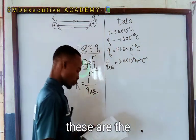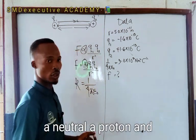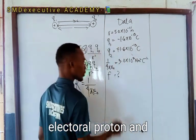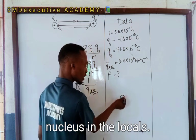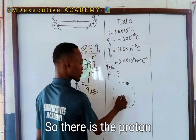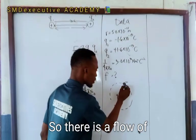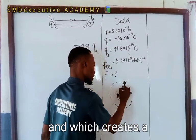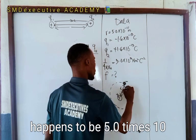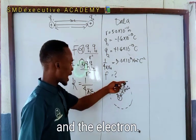For the force of attraction between a proton and an electron: in chemistry we know an atom is made up of electrons, protons, and neutrons. In the nucleus we have the proton, and the electron revolves around the nucleus. The proton carries a positive charge and the electron carries a negative charge, so there is a force of attraction between them creating a distance r of 5.0 times 10 raised to power minus 11 meters — the distance between the proton at the center and the electron.